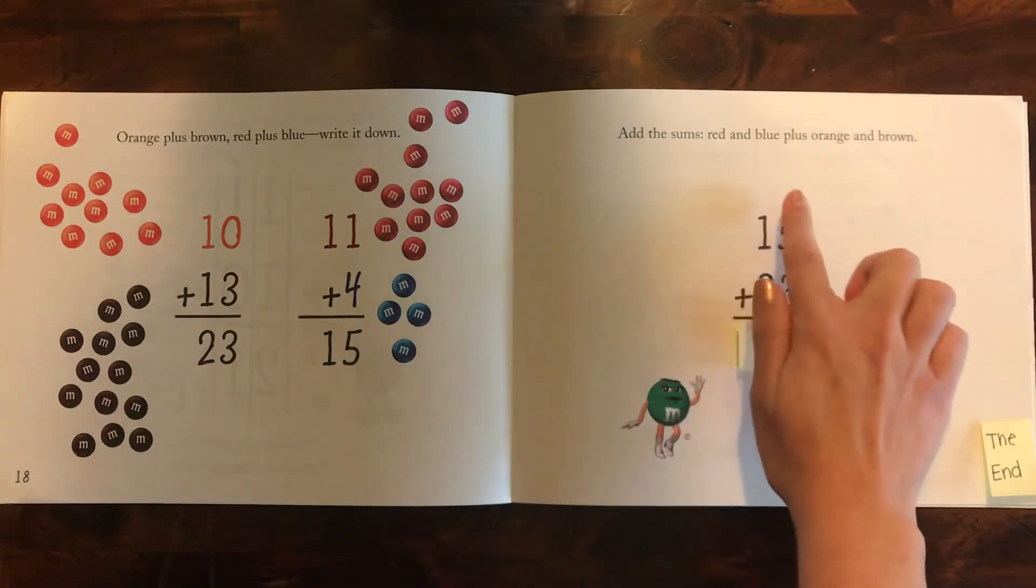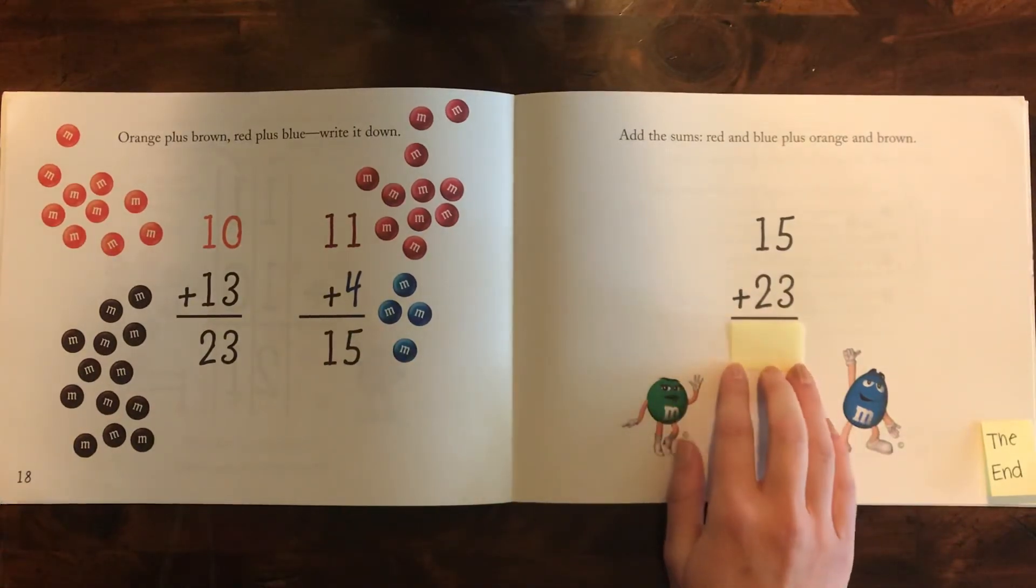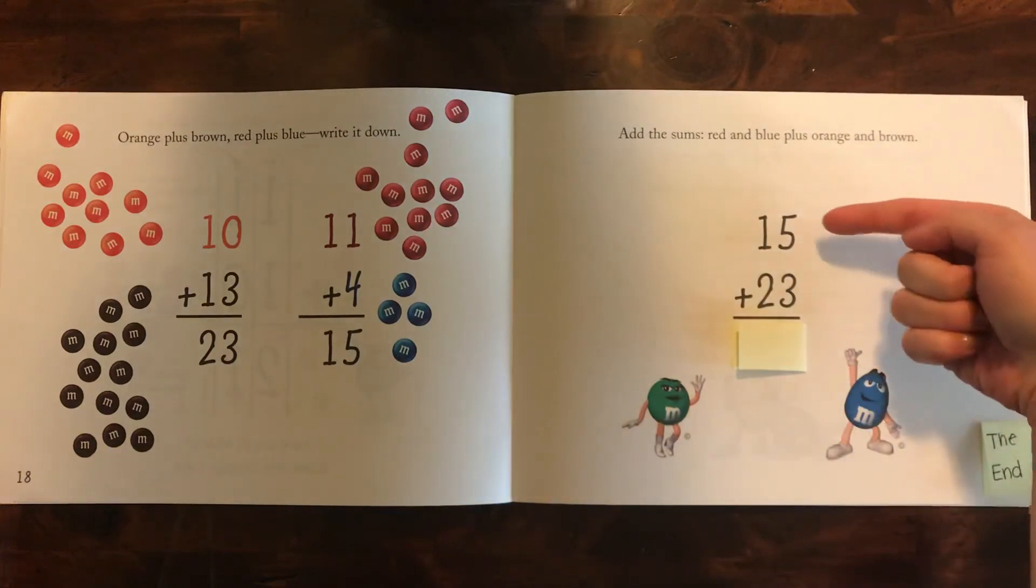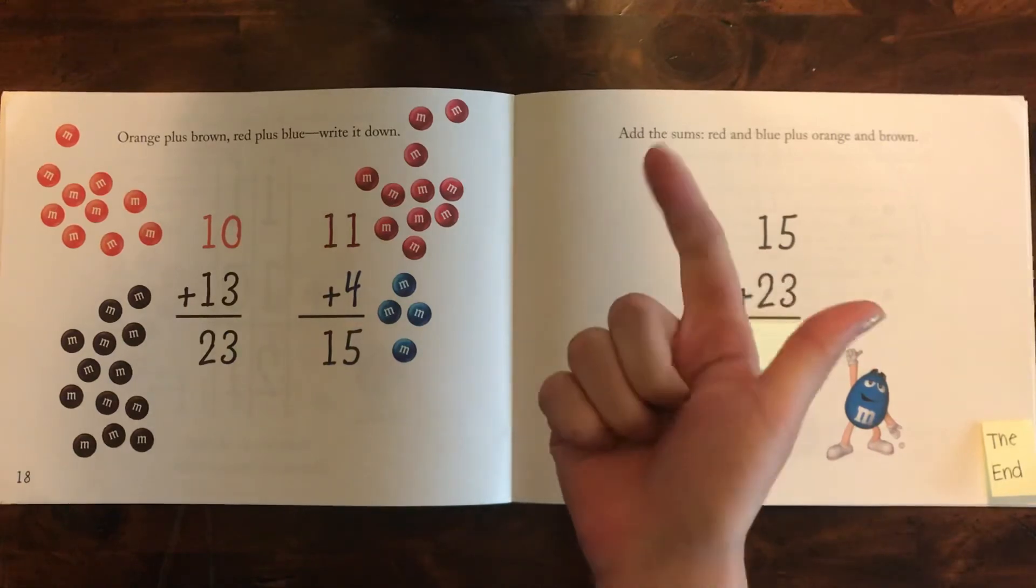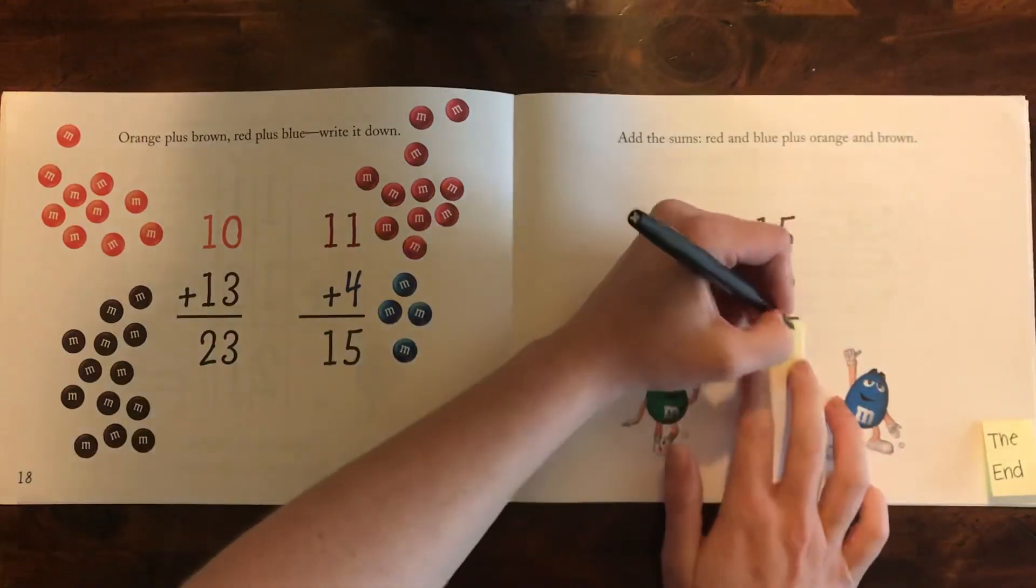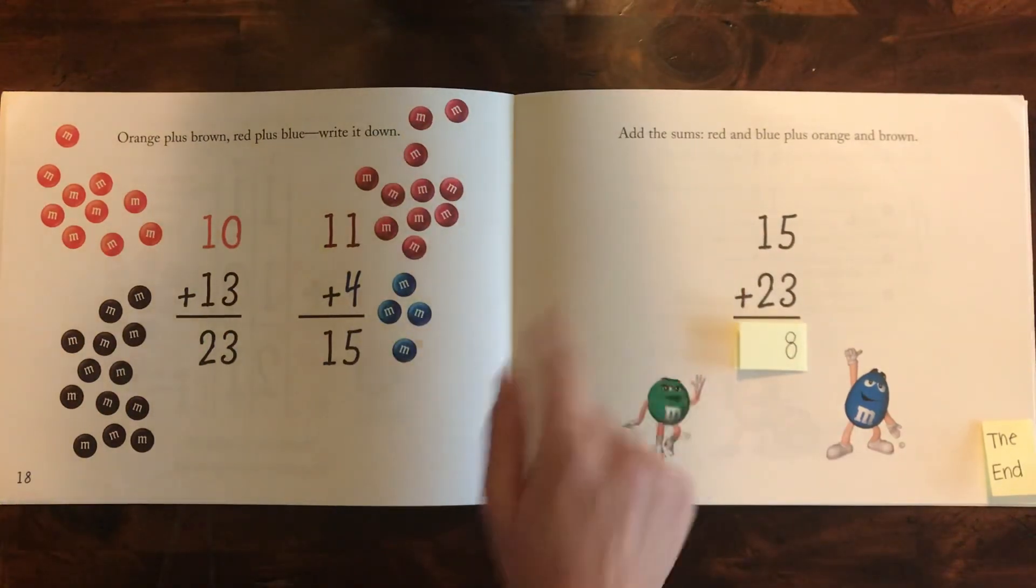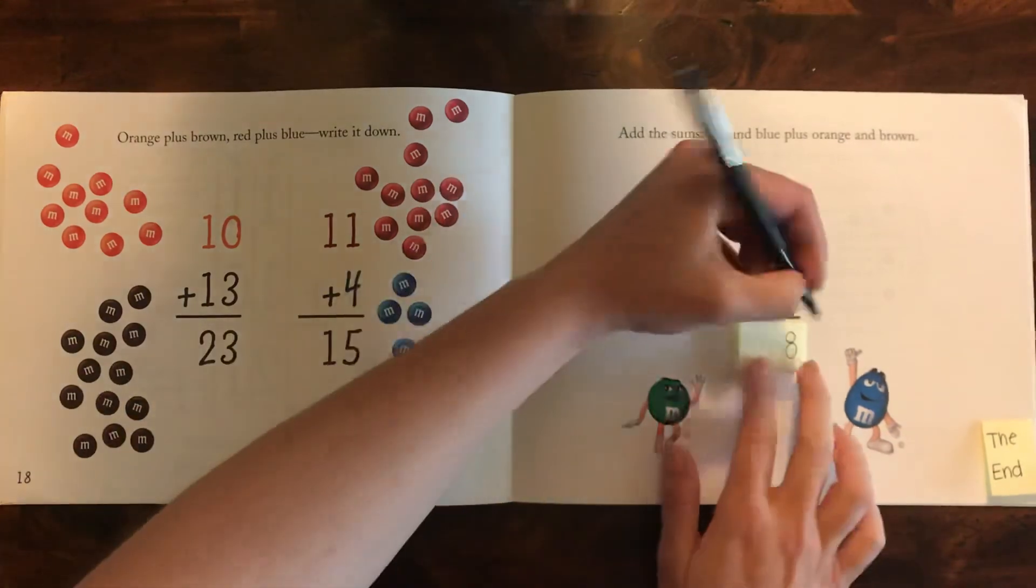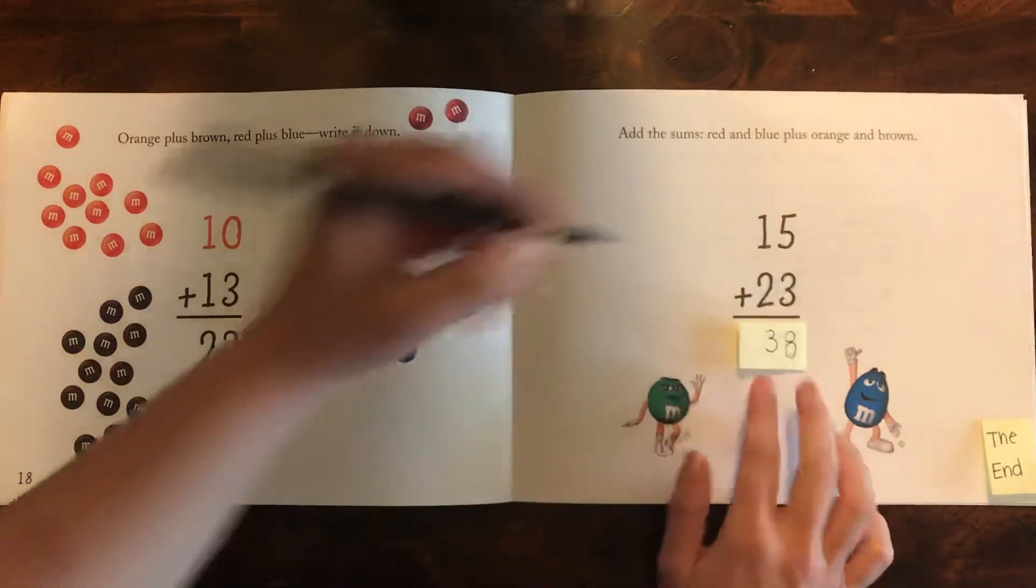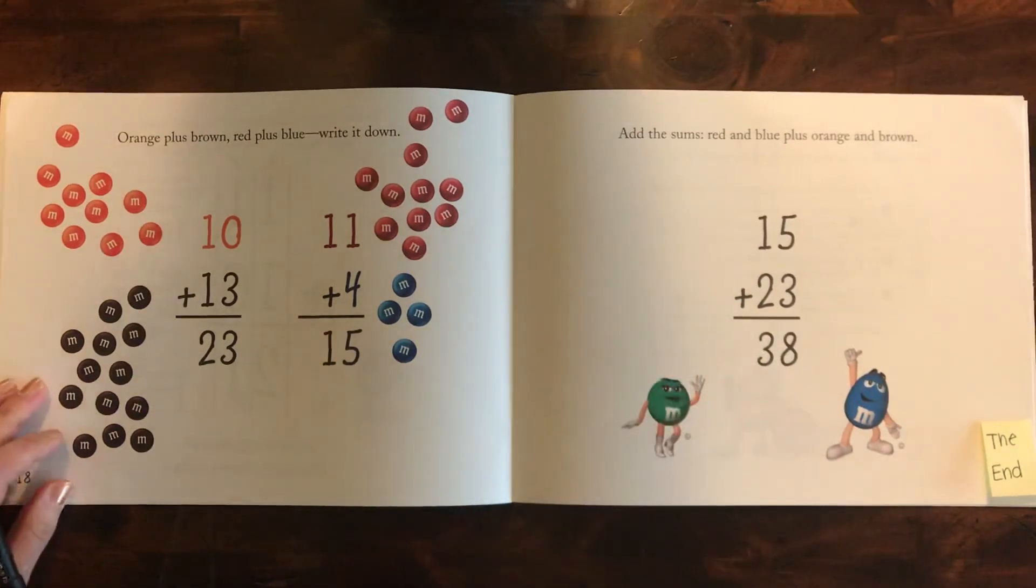Add the sums red and blue plus orange and brown. So we're taking these two and we're going to add these together. This is our challenge problem. See if you can get it. So we're going to look at five plus three first. So 5, 6, 7, 8. Let's look at the tens column: one plus two. So two plus one more is three. So I think the answer is 38. Let's see if you got, if we got the challenge and we did.